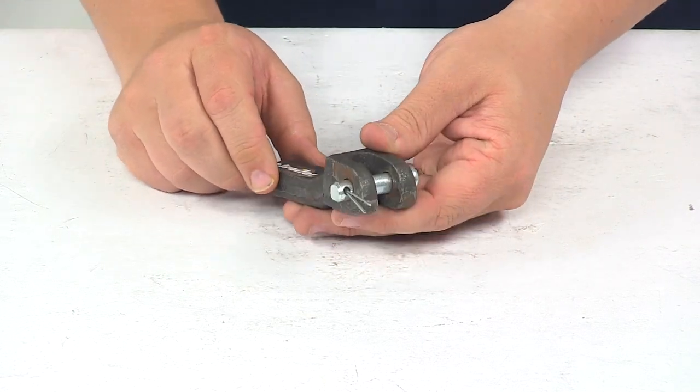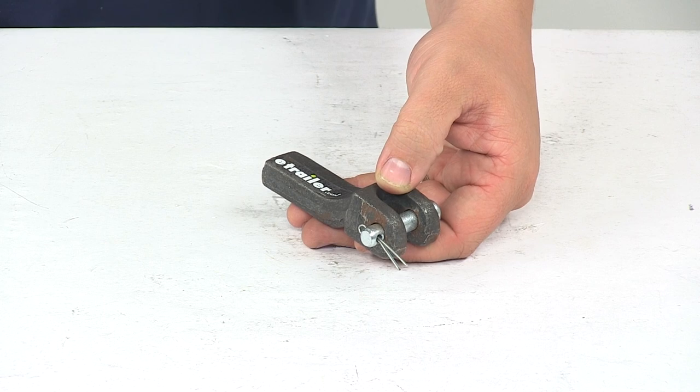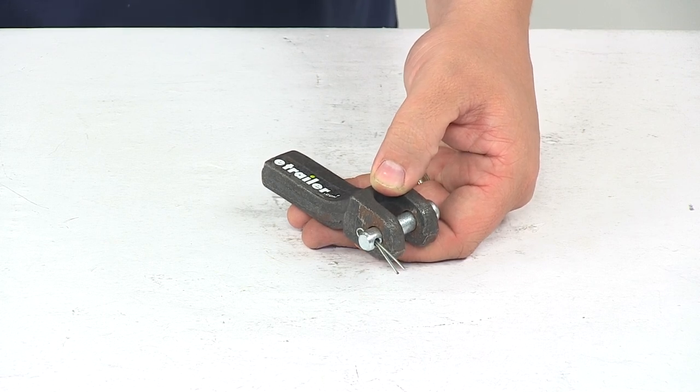That's going to do it for today's look at the weld-on safety chain retainer. Again, this is designed for a 5/16 inch chain.